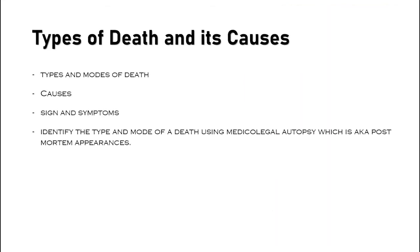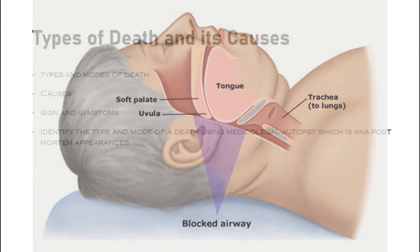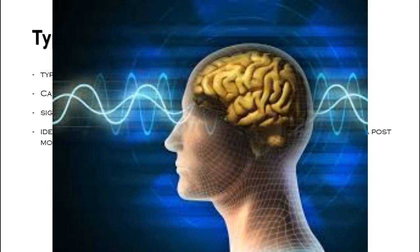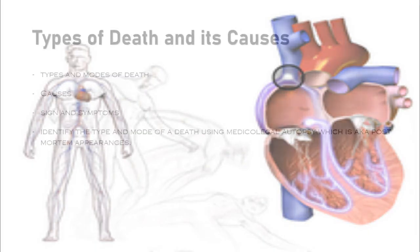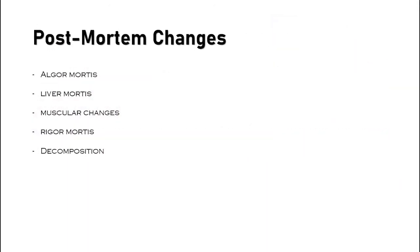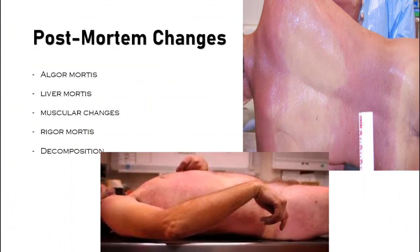Next is Types of Death and its Causes, which includes the different types and modes of death, its causes, signs and symptoms, and how to identify the type and mode of death using medical legal autopsy — also known as post-mortem appearances. Next is Post-mortem Changes, which covers signs of death and changes after death like algor mortis, livor mortis (post-mortem hypostasis), muscular changes, rigor mortis (stiffening of the body), and decomposition.